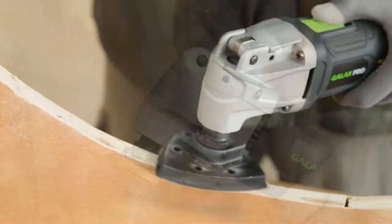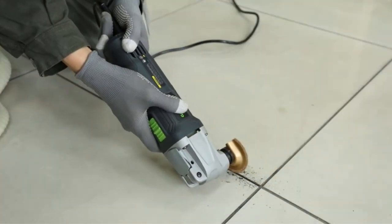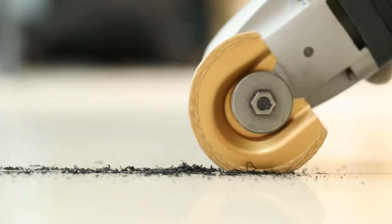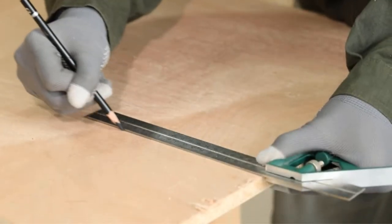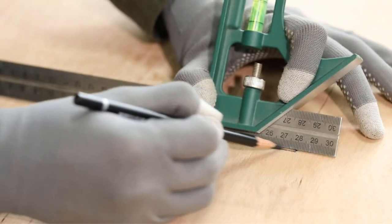There are many works you can do using an oscillating multi-tool. You can trim pipes and screws with this tool. You can also trim floorboards and ores.